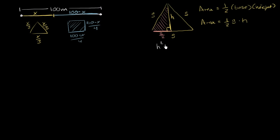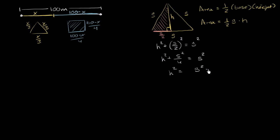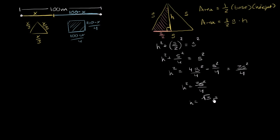Using the Pythagorean theorem: h² + (s/2)² = s². So h² + s²/4 = s². Subtracting s²/4 from both sides: h² = s² − s²/4 = 4s²/4 − s²/4 = 3s²/4. Taking the principal root: h = (√3 · s)/2.